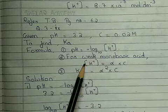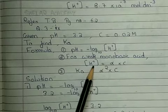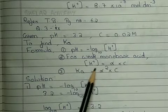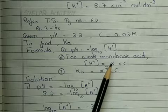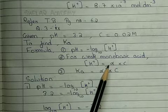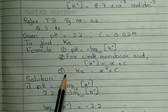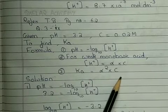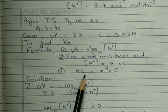Once we get H plus ion concentration, we have derived this, that is for weak monobasic acid, H plus ion concentration is alpha into C, where alpha is nothing but degree of dissociation. And once I get alpha value, we can find out Ka, that is equal to alpha square into C. So this is a 3-step question.